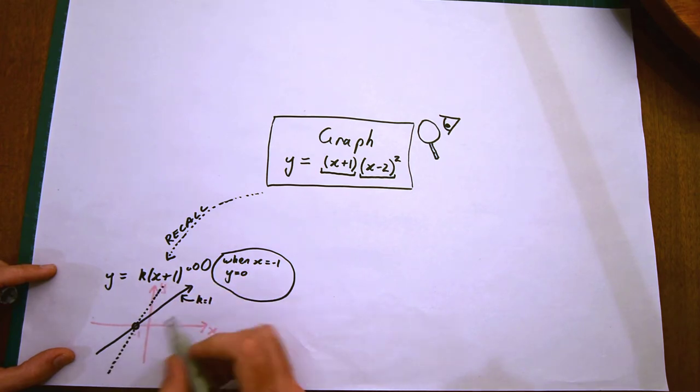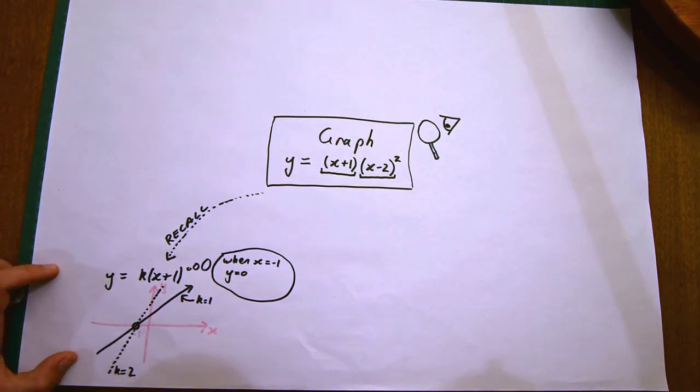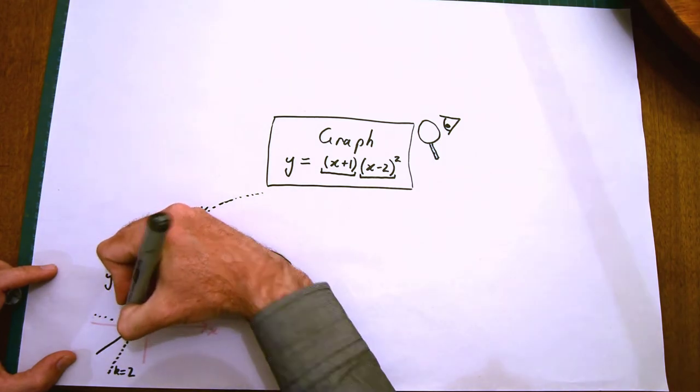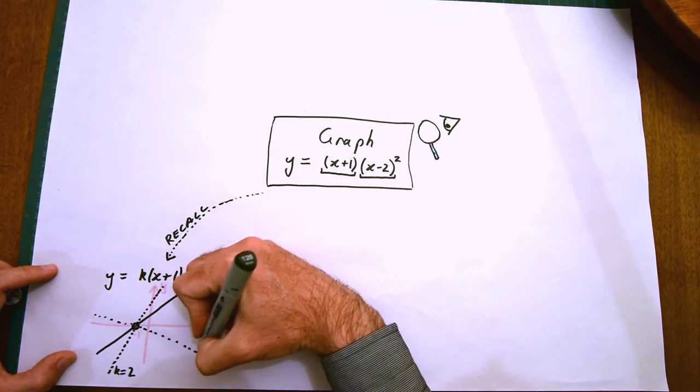If k equals 2, we end up with a line that has a steeper slope, but the number in front of x plus 1 does not affect the x-intercept because any number multiplied by 0 is 0. I could generate a straight line through that point on the x-axis with a negative slope by choosing a negative value of k.